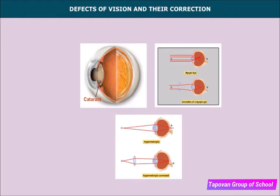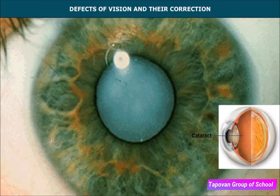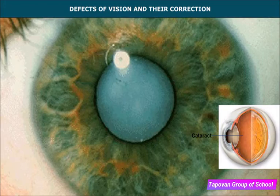A cataract is an opacity or cloudiness in the natural lens of the eye. Its development in adults is related to aging, sunlight exposure, smoking, poor nutrition, eye trauma, and certain medications such as steroids. In old age, the crystalline lens becomes hazy or even opaque due to the development of a membrane over it, leading to loss of vision.